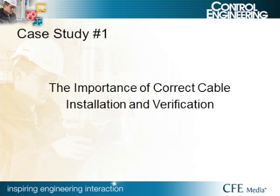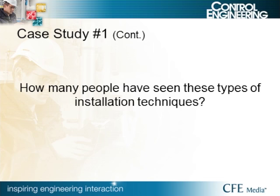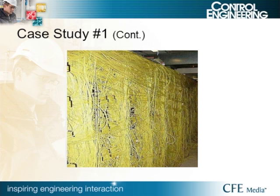On to the first case study: the importance of correct cable installation and verification. The next couple of slides show some interesting pictures — a lot of people will see something similar to this. This first one shows a cable installation that started out nice and organized, but kept growing until there was a wall of Ethernet cables. The whole point is, even when you start out with something good, you really need to stick with that standard and maintain proper segregation and cable structure.